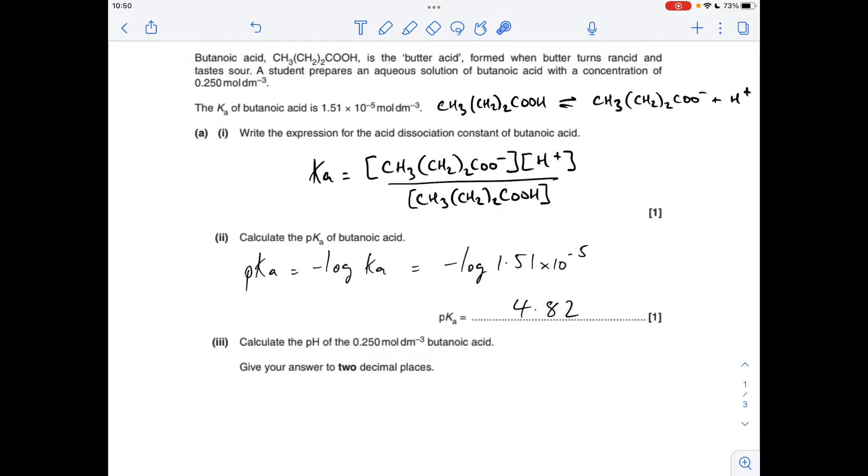Part 2, pretty straightforward, the pKa of butanoic acid. So pKa is minus log of Ka, so that's minus log of that number there, which gives us 4.82.